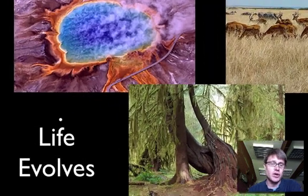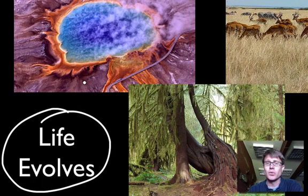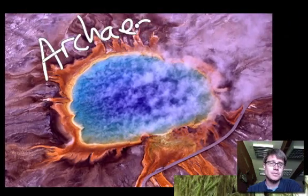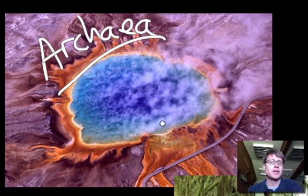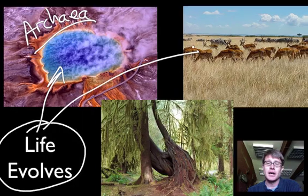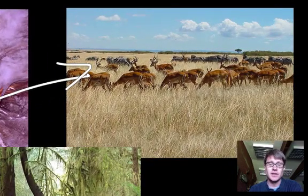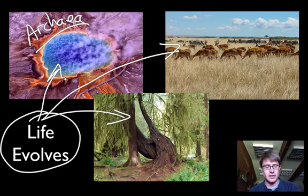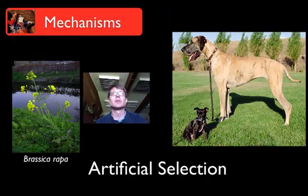One thing I want to drive home is that all life evolves. Once life showed up on our planet it's been evolving ever since. Archaea live in the hot pots of Yellowstone Park and look very similar to what the first organisms on our planet probably looked like. But archaea, animals in the savannah and the forest — all life came from one common ancestor and got to be the way it is through a process of evolution.